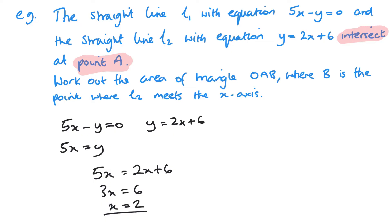Now I just need to find out my value of y. So substitute it into any equation, but I'm going to substitute it into this one. I get 5 lots of 2 equals y. So y is 10. So my value or coordinate of A is 2, 10.